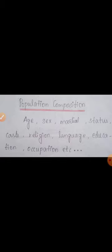The first type is population composition. What is meant by population composition? Population composition refers to the characteristics such as age, sex, marital status, caste, religion, language, education, occupation, etc. It helps us to understand the social, economic and demographic structure of population.